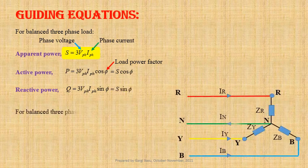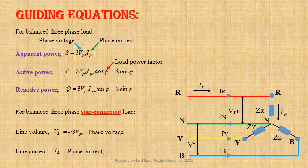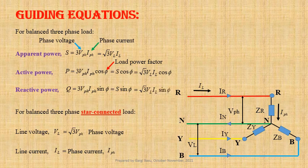For balanced three-phase star connected load, line voltage VL equals root three times V_phase, where V_phase is the phase voltage. Line current IL equals phase current I_phase. We can write apparent power S equals root three times VL into IL. Active power P equals root three times VL into IL cos phi. Reactive power Q equals root three times VL into IL sin phi.